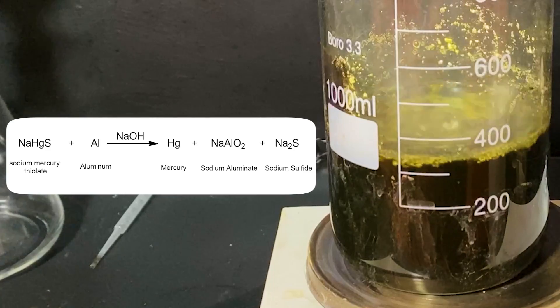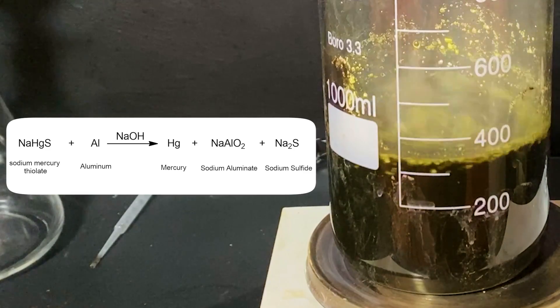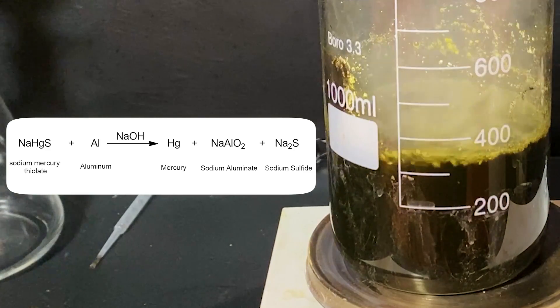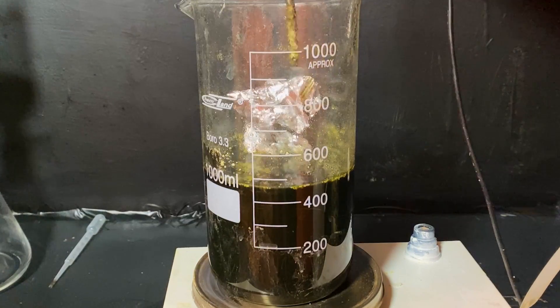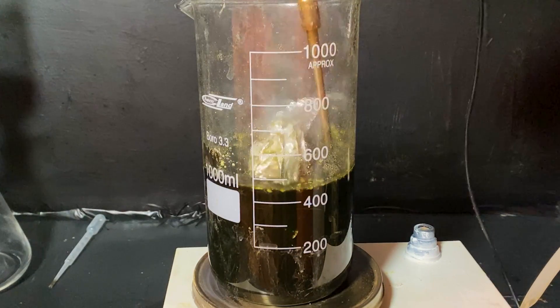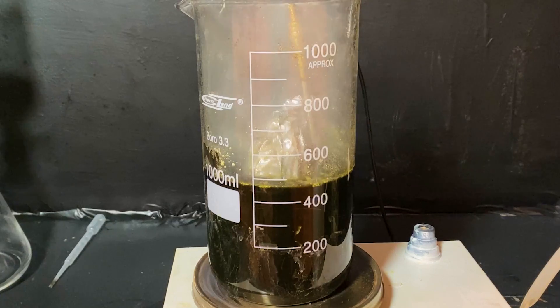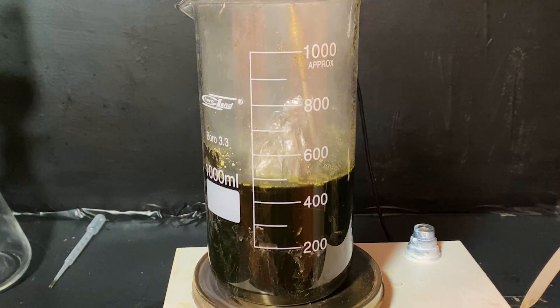As the major reaction here, the mercury sulfide complex reacts with the aluminum metal to form mercury metal, sodium aluminate, and sodium sulfide. Once the mercury complex is exhausted, the next major reaction is the sodium hydroxide reacting with the aluminum metal to form sodium aluminate and hydrogen gas.